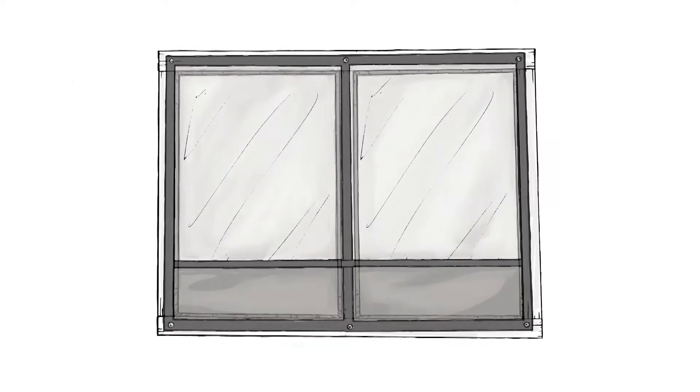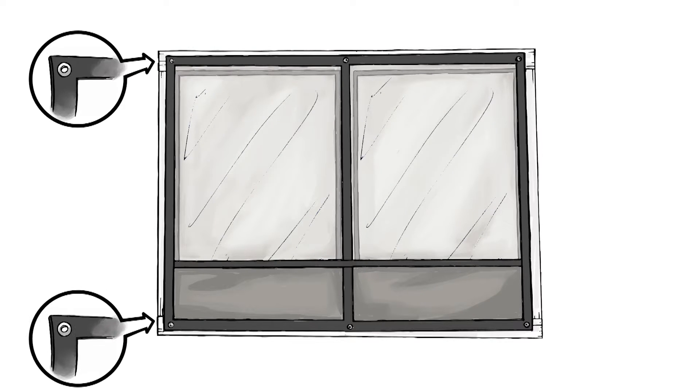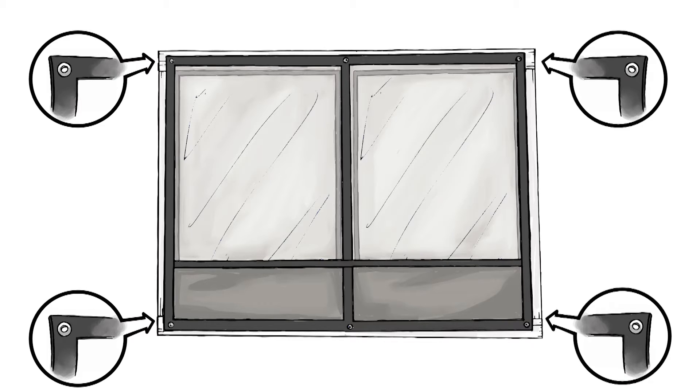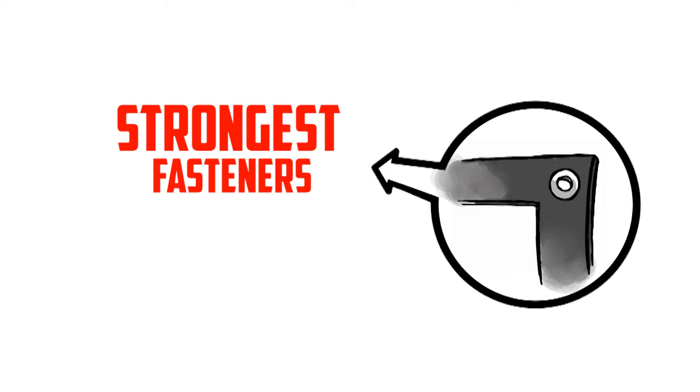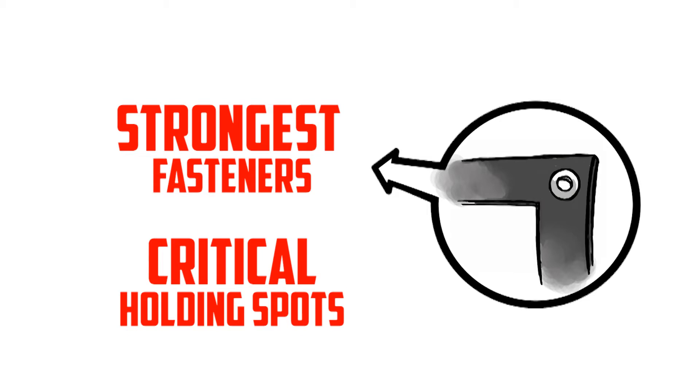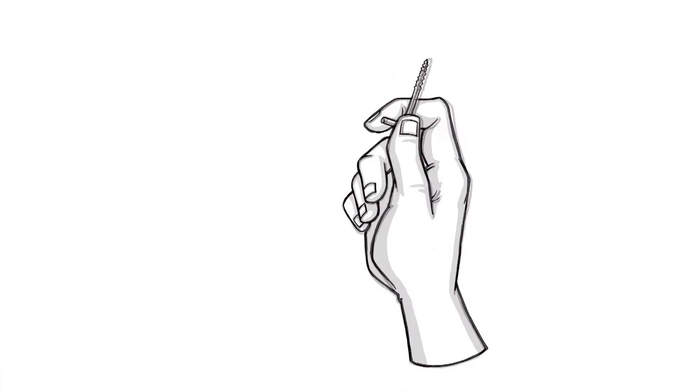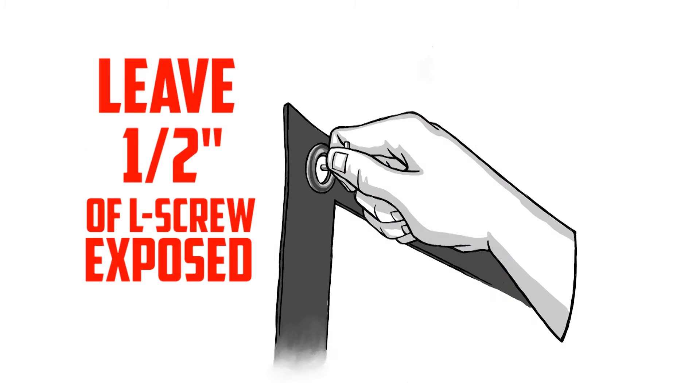Now he hangs his panels using fixed fasteners. In the four corners of each panel, there are metal grommets already installed. These are the strongest fasteners and the four corners are really the most critical holding spots. Jerry takes an L-shaped screw and installs it through the grommet, leaving a half inch of the L-shaped screw exposed.